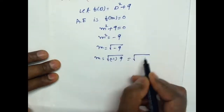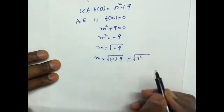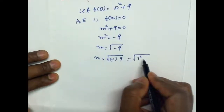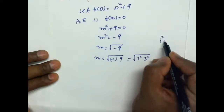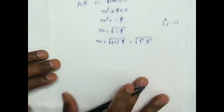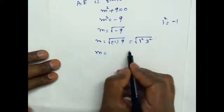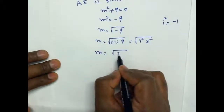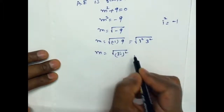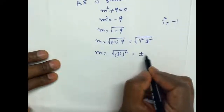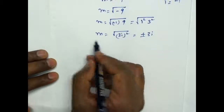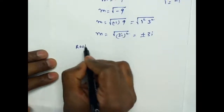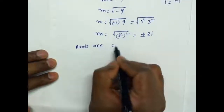Now, since i² = -1, and 9 = 3², we have m² = i² × 3², so m = ±3i. The roots are complex.